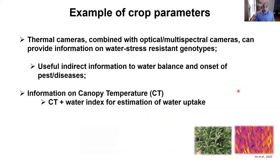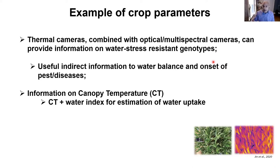Thermal cameras, especially in combination with optical multispectral sensors, can provide useful information. In variety trials, they can provide information about water-resistant genotypes. In precision agriculture, spatial thermal images are used to estimate water balance, understand where in a field there is more water stress, and detect onset of pest and disease. Canopy temperature can also be used to estimate water uptake, especially when linked to other indices like the water index, and could be a nice link to crop modeling input.